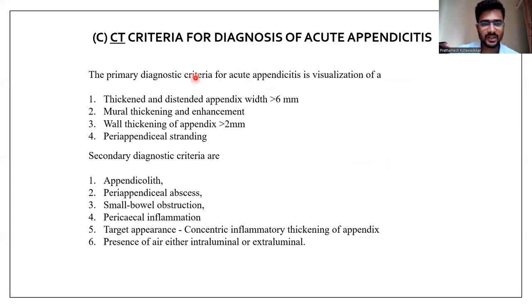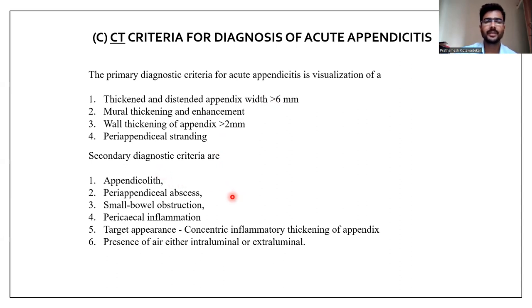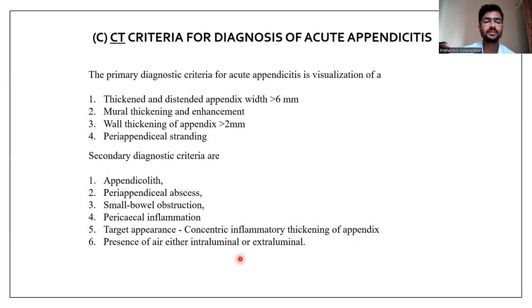On CT, primary diagnostic criteria include a thickened and distended appendix with width greater than 6 mm, mural thickening and enhancement, wall thickening greater than 2 mm, or peri-appendiceal stranding. Secondary diagnostic criteria include appendiceal or peri-appendiceal abscess, small bowel obstruction, pericecal inflammation, target appearance with concentric inflammatory thickening of the appendix, and the presence of air either extraluminally or intraluminally.